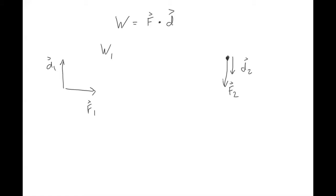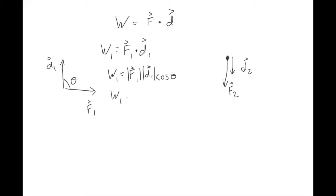If you want to know the work done in picture one by force one acting along distance d₁, the angle theta between them is 90 degrees. So the work done would involve cosine of 90, which is zero. The work done in picture one is zero because cosine of 90 is zero.